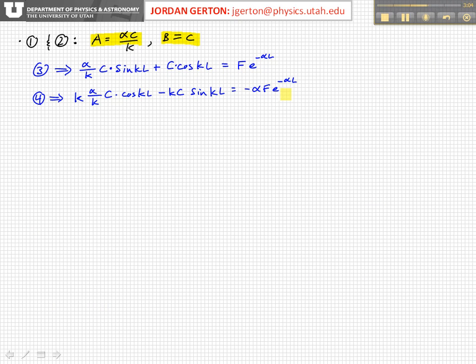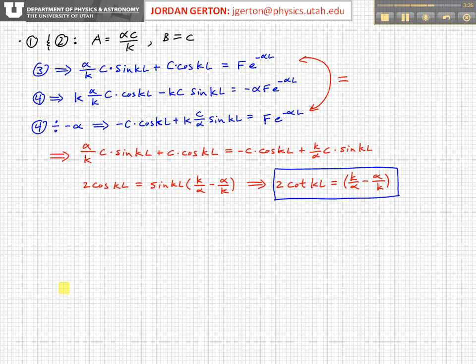Now, what we notice is that if we divide equation four here, this rewritten equation four by minus alpha, if we divided the right-hand side by minus alpha, then the right-hand side of equation three and the right-hand side of this new equation four would be equal to each other. And so we would have to divide the left-hand side of four by minus alpha too. So if we do that, we get the equation four becomes minus c cosine kL plus k times c over alpha sine kL, and this is now equal to f e to the minus alpha L. And as I said, these two things are now equal to each other, as I've indicated here.